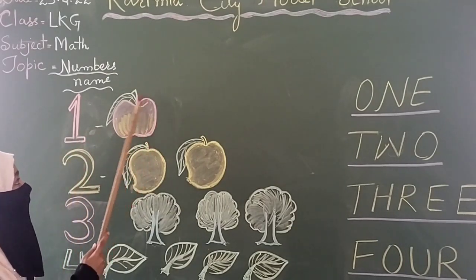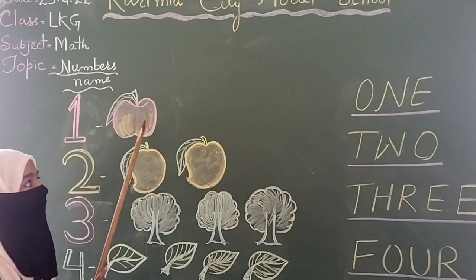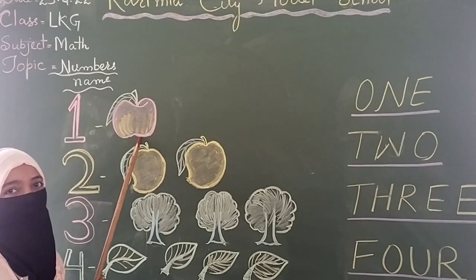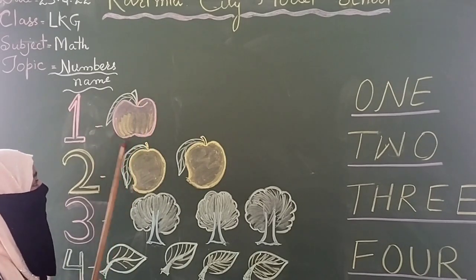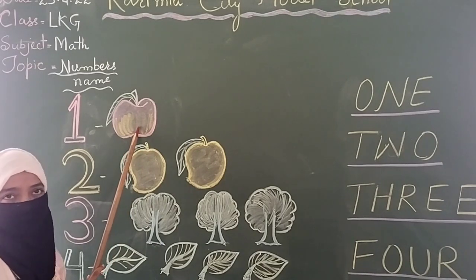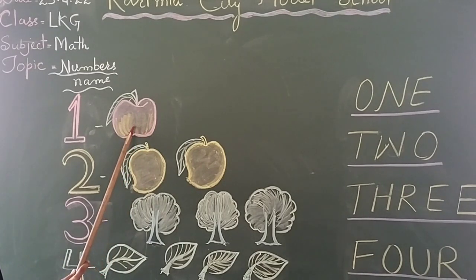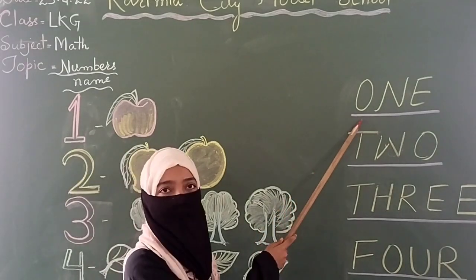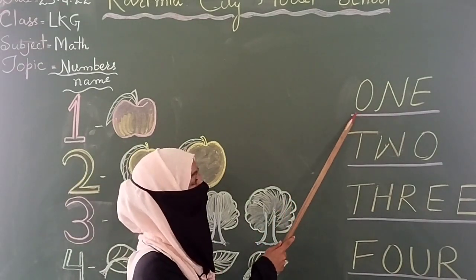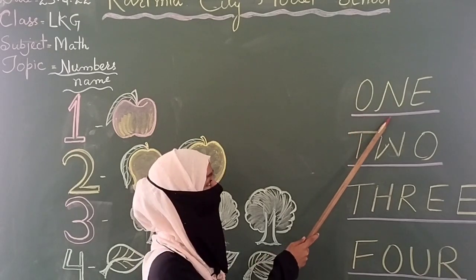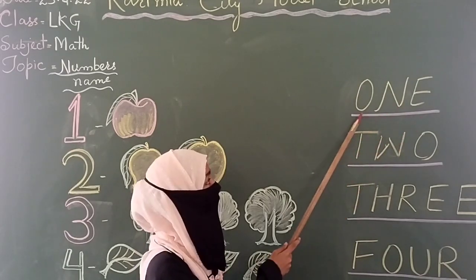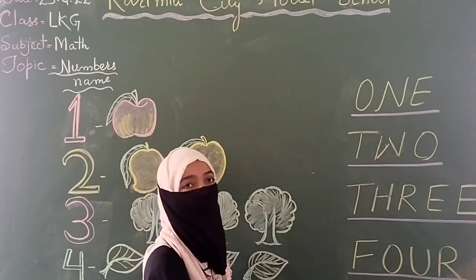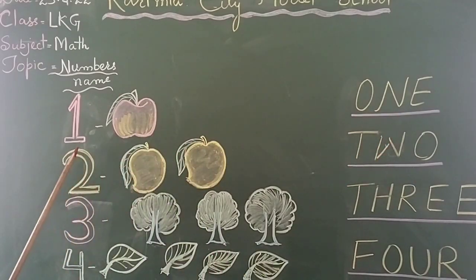Here it's written one. What is this? It's one. What is this? This is an apple. How many apples are there? Count — it's only one. So one apple is there. Now see the spelling of one: say with me O-N-E, one. O-N-E, one.